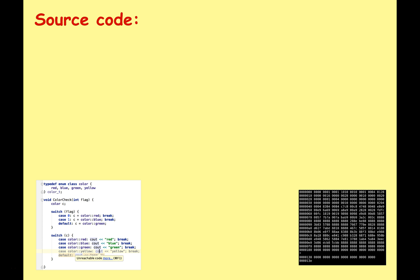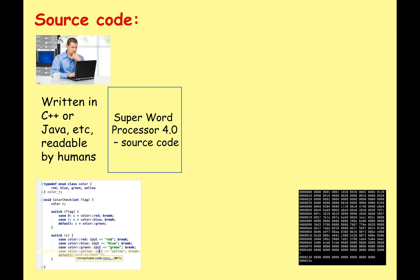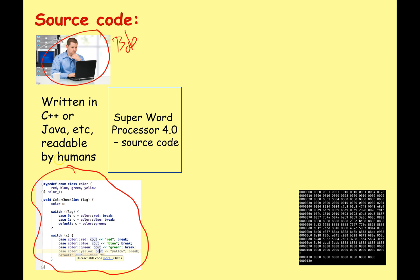So what do we mean by source code? Over here we've got my friend Bob. Bob is a programmer and he's currently working on Super Word Processor version 4. He could be writing this in C++, Java, Python, C Sharp, or any other computer programming language, and he's creating what we call source code — this is what we call human readable. That means a regular person can read it and understand it to some extent.